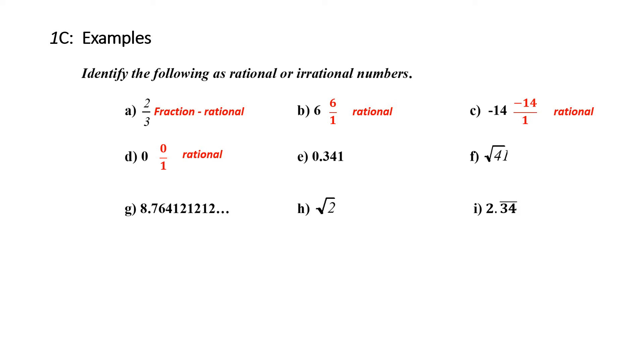0.341. Well, we've got a decimal. Does this decimal repeat? No. Does it terminate? Yes. My last number is in the 1,000 spot. Therefore, this is 341 over 1,000, which is a terminating decimal. Therefore it's rational.